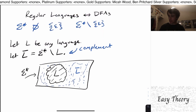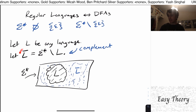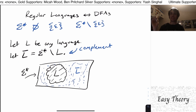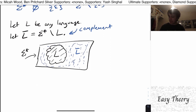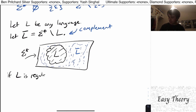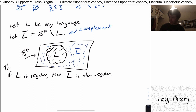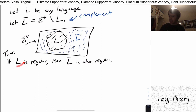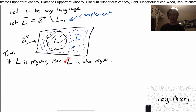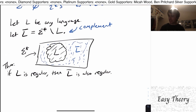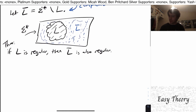So why do we want to care about such a thing? If we know how to solve a particular problem, then being able to solve L-bar — the strings that are not in the problem we're considering — is really useful. What we're going to show here is: if L is regular, then L-bar is also regular. This is a theorem we're going to prove. If we can show L is a regular language, that implies L-bar is also regular.